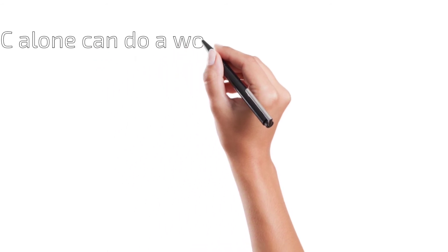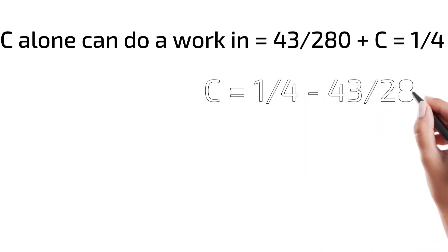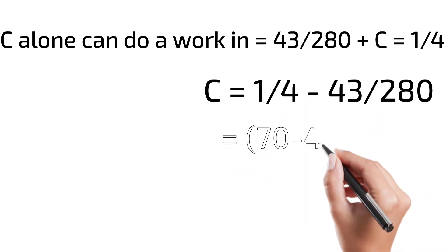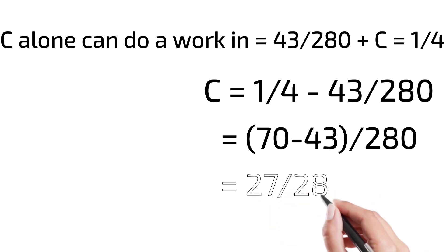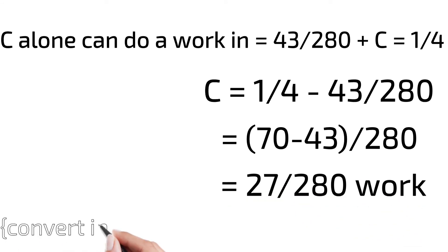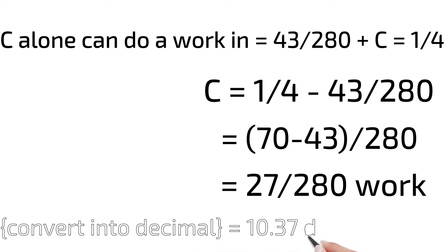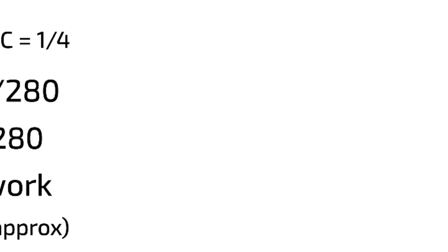C alone can do the work: 43 by 280 (which is A's value) plus C equals 1 by 4. So if we subtract 43 by 280 from 1 by 4, the answer is 27 by 280 work. Converting that to decimal gives approximately 10.37 days for C alone.